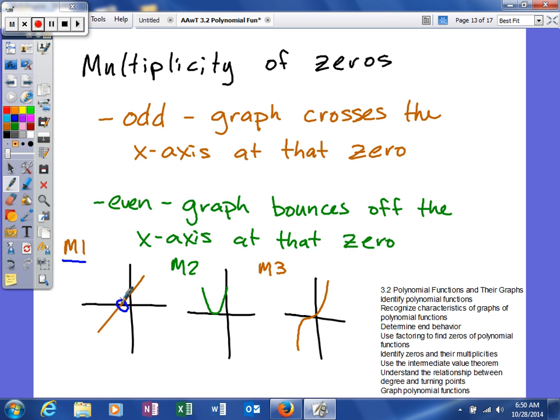Where an even multiplicity like this one, you can see your graph does not cross the x-axis, it bounces. So if it's coming from above the x-axis, it will touch the x-axis and go back up. Or if it's coming from below the x-axis, it will come up, touch the x-axis, and then go back down.